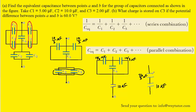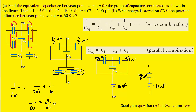We finally have a series combination, so we're going to follow the series equation. We have 1 over their equivalent capacitance equal to 1 over 26 thirds microfarads plus 1 over 10 microfarads. If you add the right-hand side together, perhaps using a calculator, you should get 14 over 65 microfarads in the denominator. When you flip both sides of that fraction, the equivalent capacitance becomes 65 over 14 microfarads. That is indeed the final answer, and if we reduce that to a decimal, we get roughly 4.64 microfarads.